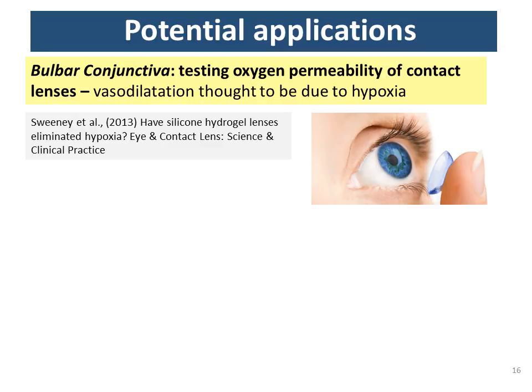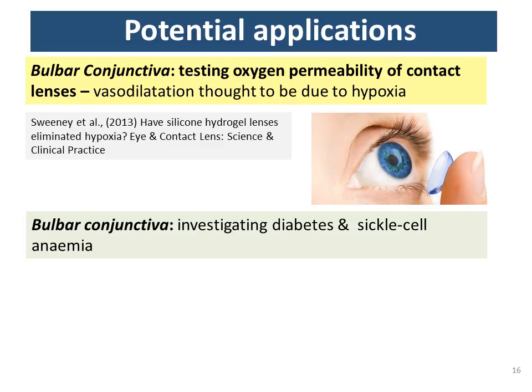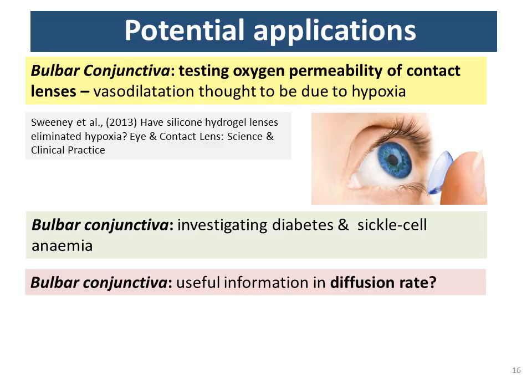Potential applications include contact lens wear — contact lenses have varying oxygen permeability, and if they don't allow enough oxygen diffusion they can cause hypoxia. Studies of the bulbar conjunctiva have looked at vessel dilation due to contact lens wear, with a hypothesis that this is partly due to hypoxia, which could be tested with this multispectral imaging system. The technique may also be of interest for investigating diabetes and sickle cell anaemia, two conditions where the bulbar conjunctival microvasculature is known to be affected — diabetes reduces the number of visible capillaries and increases average vessel diameter compared to healthy controls.